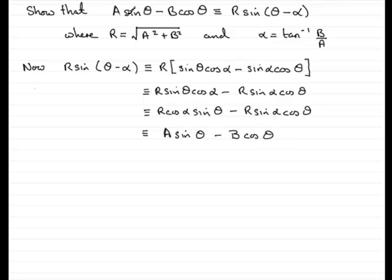So, I've been able to prove, first of all, the first stage of this, that R sine theta minus alpha is identical to A sine theta minus B cos theta, where A and B are constants.